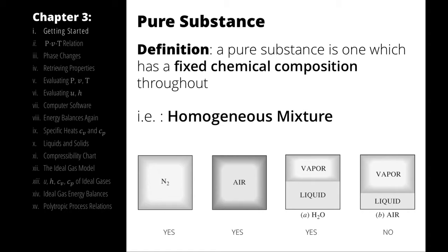The next distinction we have to make is between phases. The reason we have to do that is because our material properties are sorted by phase, so we have to determine the phase of our substance before we can determine properties about it. To do that, we are assuming that the phases are neatly organized, that there are clear distinctions between them, and that they are very simple and predictable in their behavior. We are collapsing the reality of phases into neat and orderly boxes with solid lines between them.